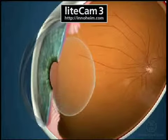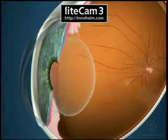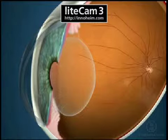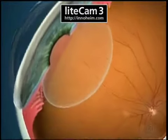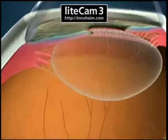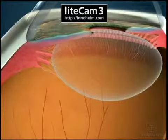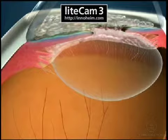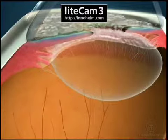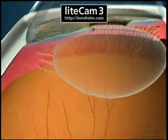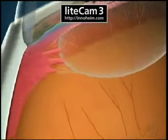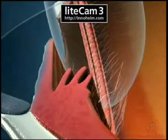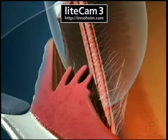The ciliary body is located behind your iris near the crystalline lens. This structure has two functions. The aqueous fluid that fills the front of your eye is made inside the ciliary body. Also, the ciliary body is made up of muscles that allow the eye to focus at different distances.